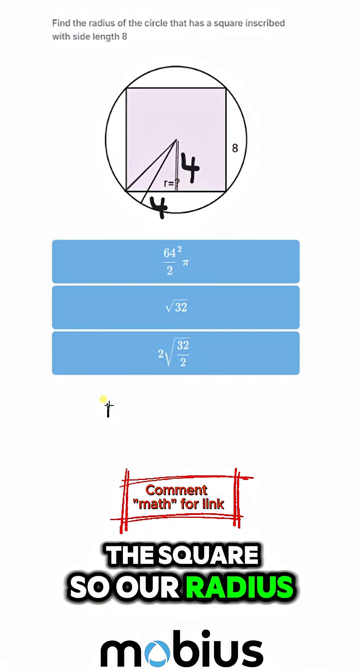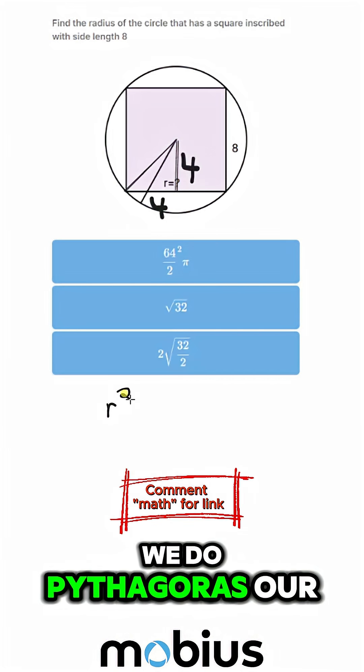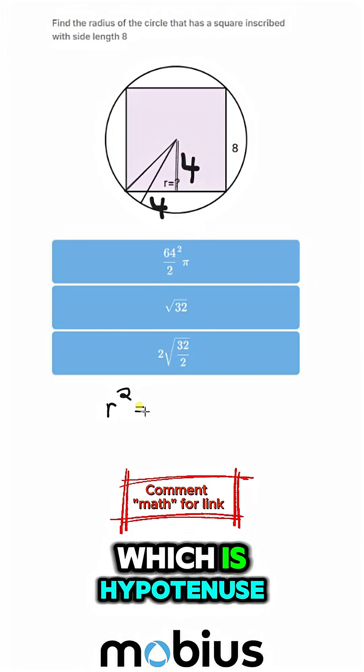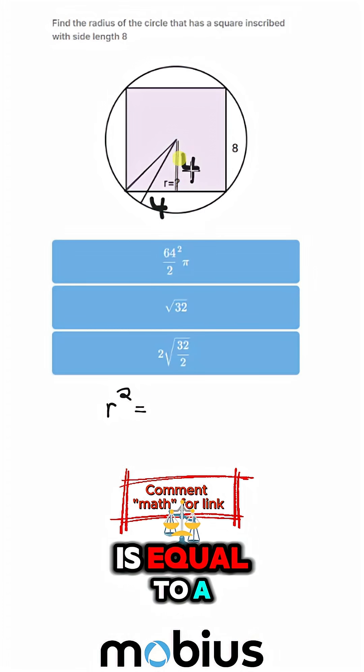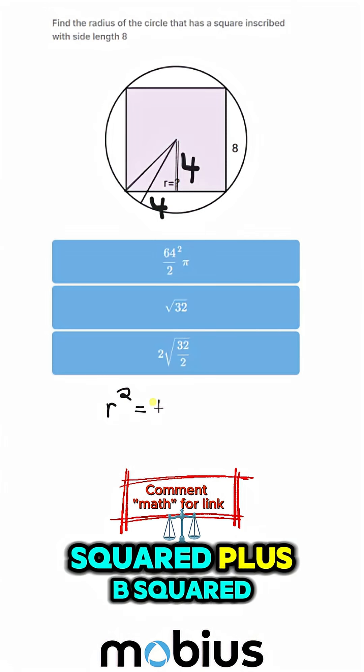So our radius - we do Pythagoras - our radius squared, which is the hypotenuse, is equal to a squared plus b squared.